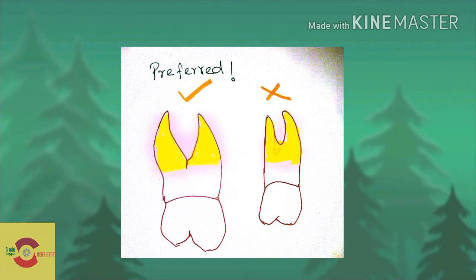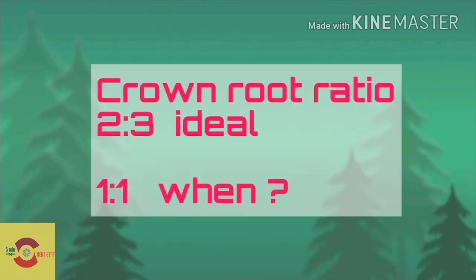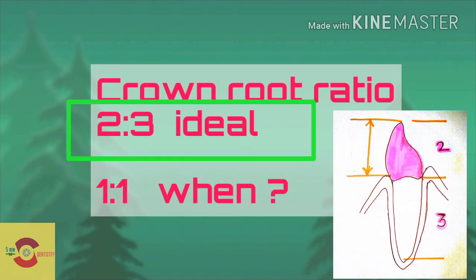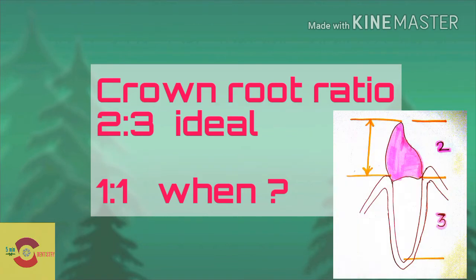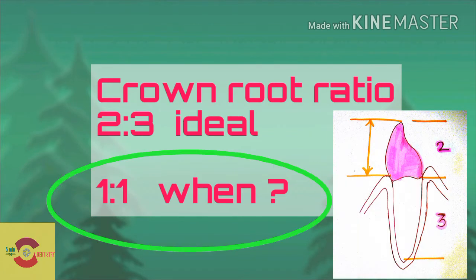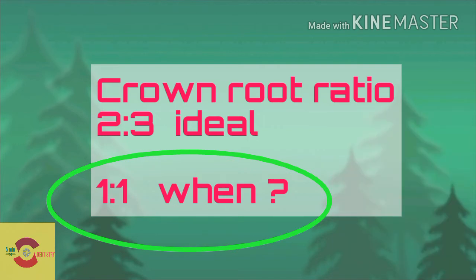Diverging roots are even better. Moving on to crown-root ratio, the ideal ratio is 2:3, while 1:1 may be acceptable if the opposing occlusion is a removable prosthesis or if the opposing teeth are periodontally weak.